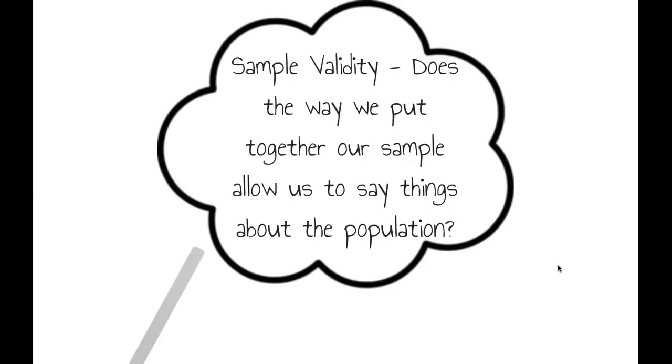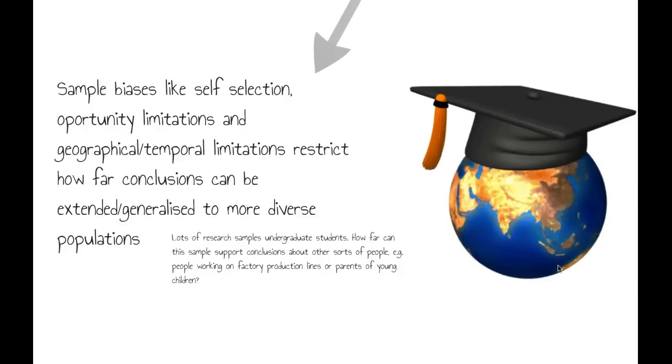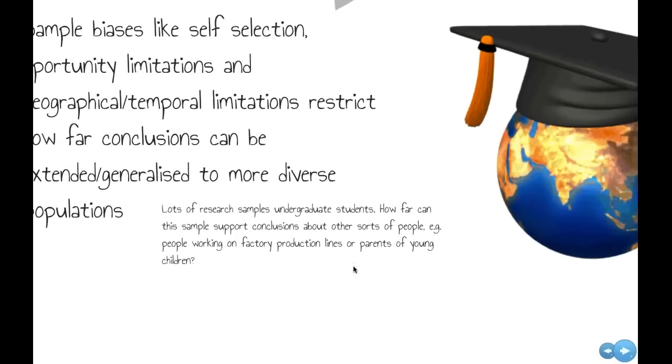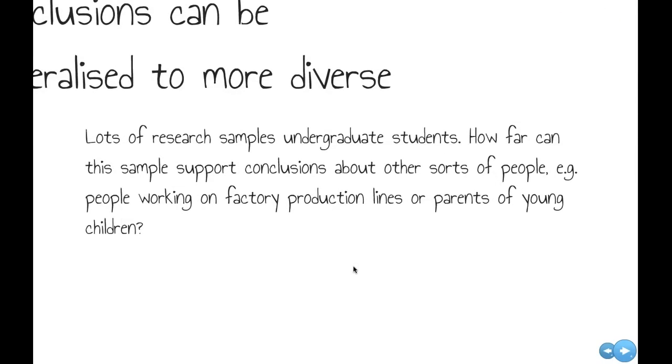Sample validity: does the way we put together our sample allow us to say things about the population as a whole? There are sample biases like self-selection or opportunity sampling. Geographical or temporal limitations, where we only ask our questions in one place or at one particular time, restrict how far our conclusions can be extended or generalised to more diverse populations. It's a stock critical point that we make about a lot of research that it uses undergraduate students, especially American research, and how far can that sort of sampling support conclusions about people that work in factories or the parents of young children?